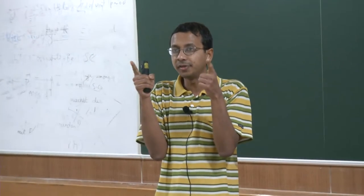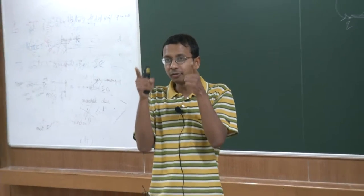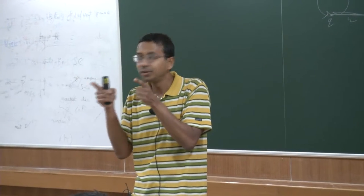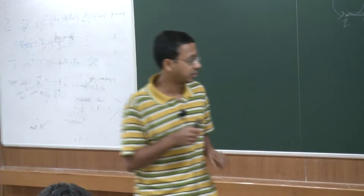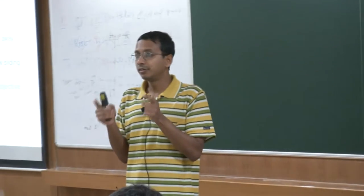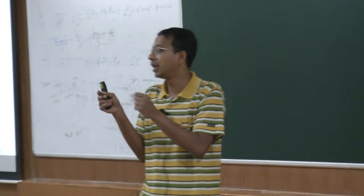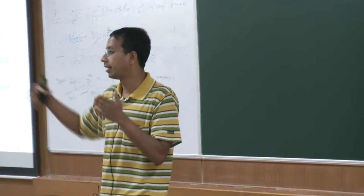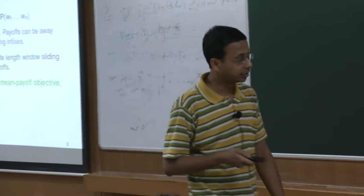We have an infinite sequence and a window which is sliding, and for each of these sliding windows we want the threshold value to be satisfied. This is a strengthening of the classical min payoff objective: if the window min payoff objective is satisfied — if for every sliding window the value is greater than or equal to some lambda — then it implies that the classical min payoff is also greater than or equal to lambda.